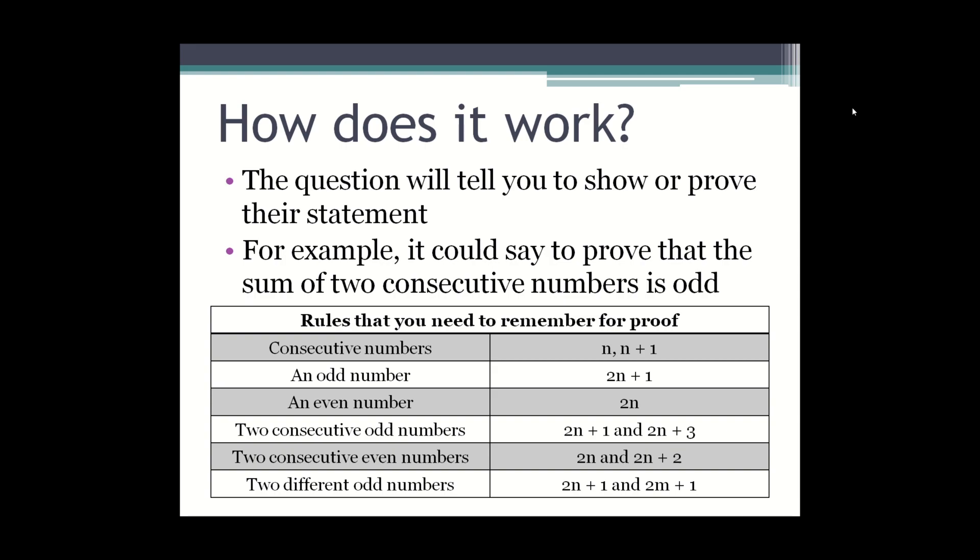These are the rules you need to remember for proof. For consecutive numbers your first number will be n and your second number will be n plus 1. An odd number is 2n plus 1. An even number is 2n.